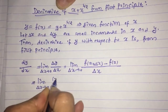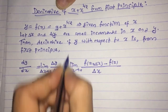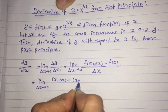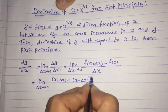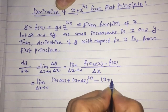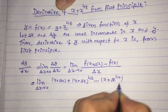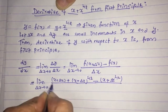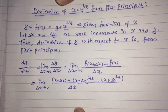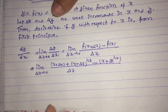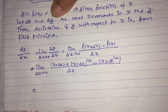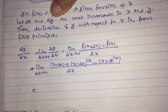This is the formula from the first principle of derivative, which is very important in calculus for finding the derivative of any given function. Now writing the formula in terms of the given function x plus square root x, it becomes: limit as δx tends to 0 of [(x + δx) plus (x + δx)^(1/2) minus (x plus √x)] divided by δx.